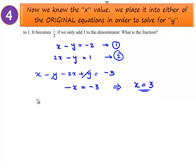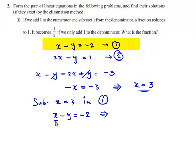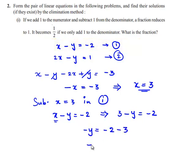Let us substitute x is equal to 3 in equation number 1. x minus y is equal to minus 2 implies 3 minus y is equal to minus 2. So minus y is equal to minus 2 minus 3, which is minus 5. That implies y is equal to 5. We obtain the value of x as 3 and the value of y as 5.